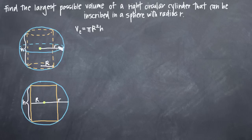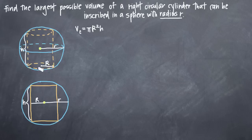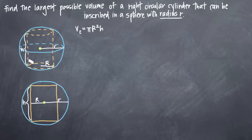We also want to label every part of this diagram that we can. We know that the radius of the sphere has to be r, so we've labeled the radius of the sphere as r. We also know that since this is a right circular cylinder, it will have a radius — we can call that capital R — and we've labeled that as well. Finally, the cylinder is going to have a height, and we can call the height h.